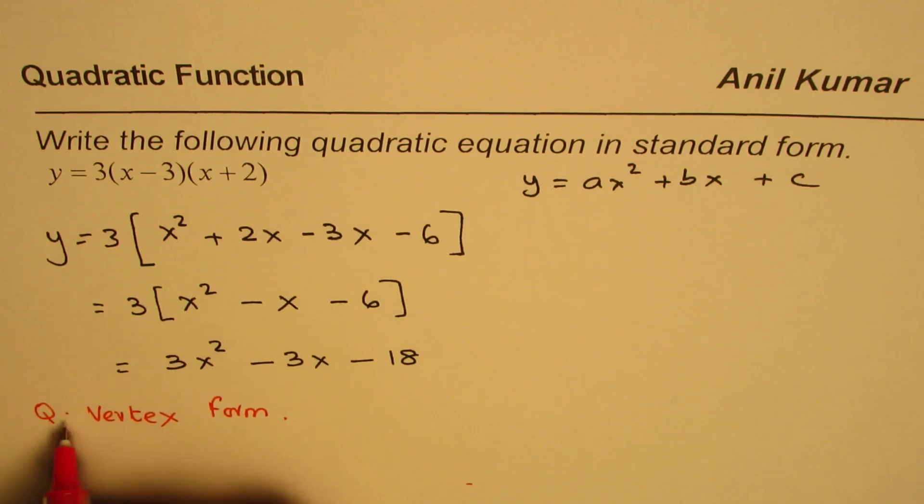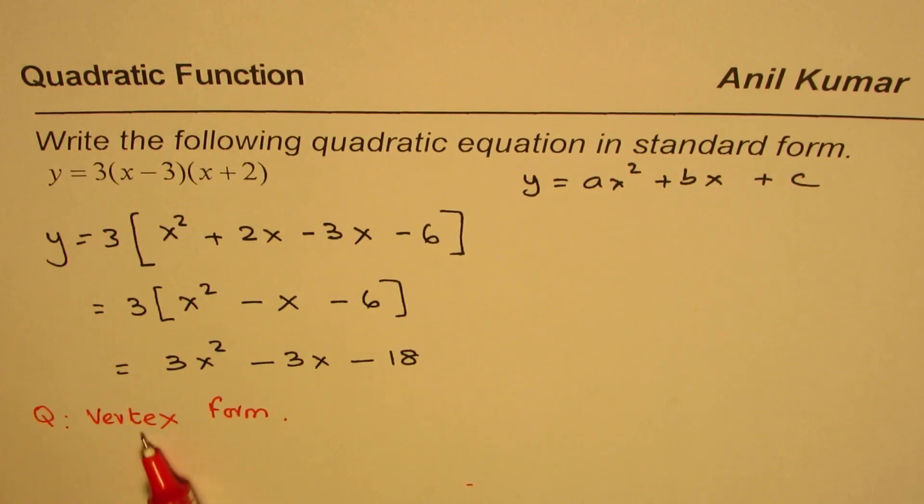So that is a question for you. Convert this equation in vertex form. You can do that by completing the square. That is one way. The second way is also you can find the axis of symmetry and then write. We'll take that up in another video.